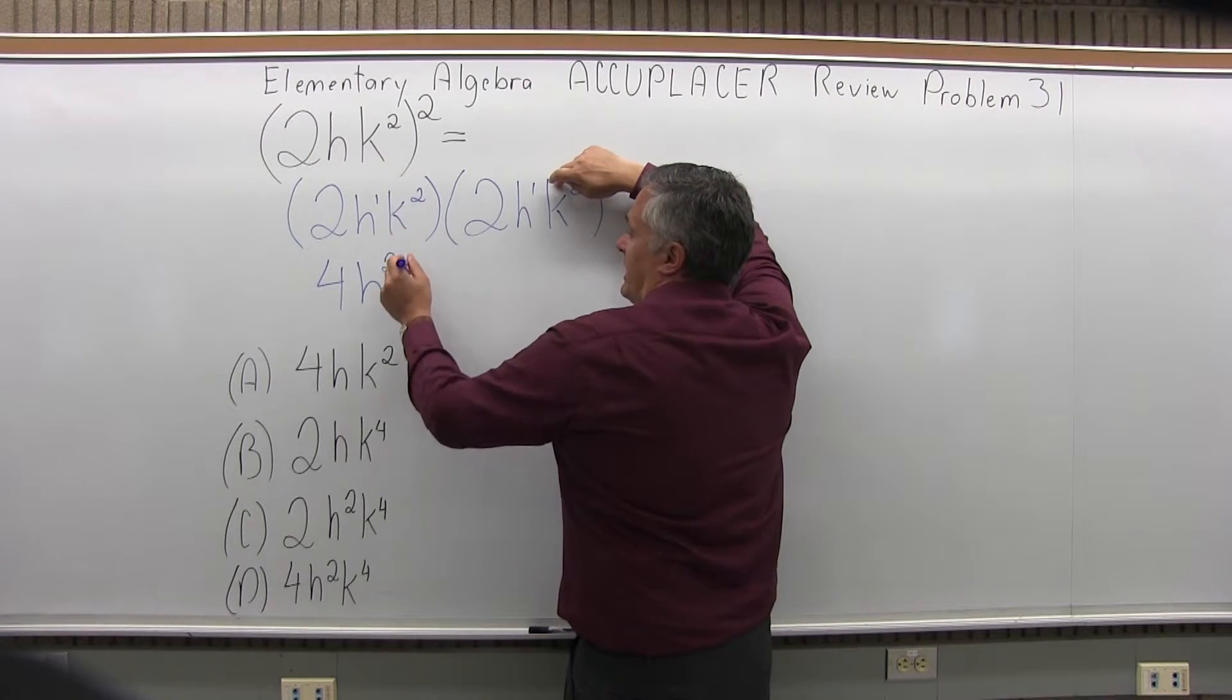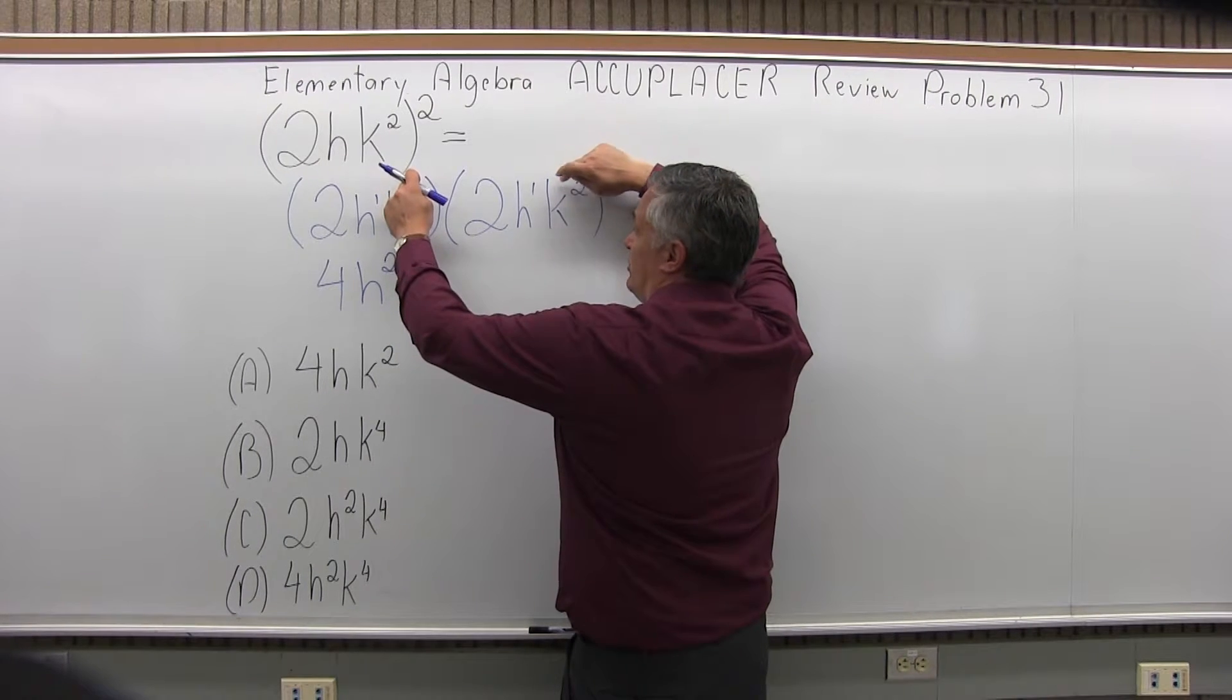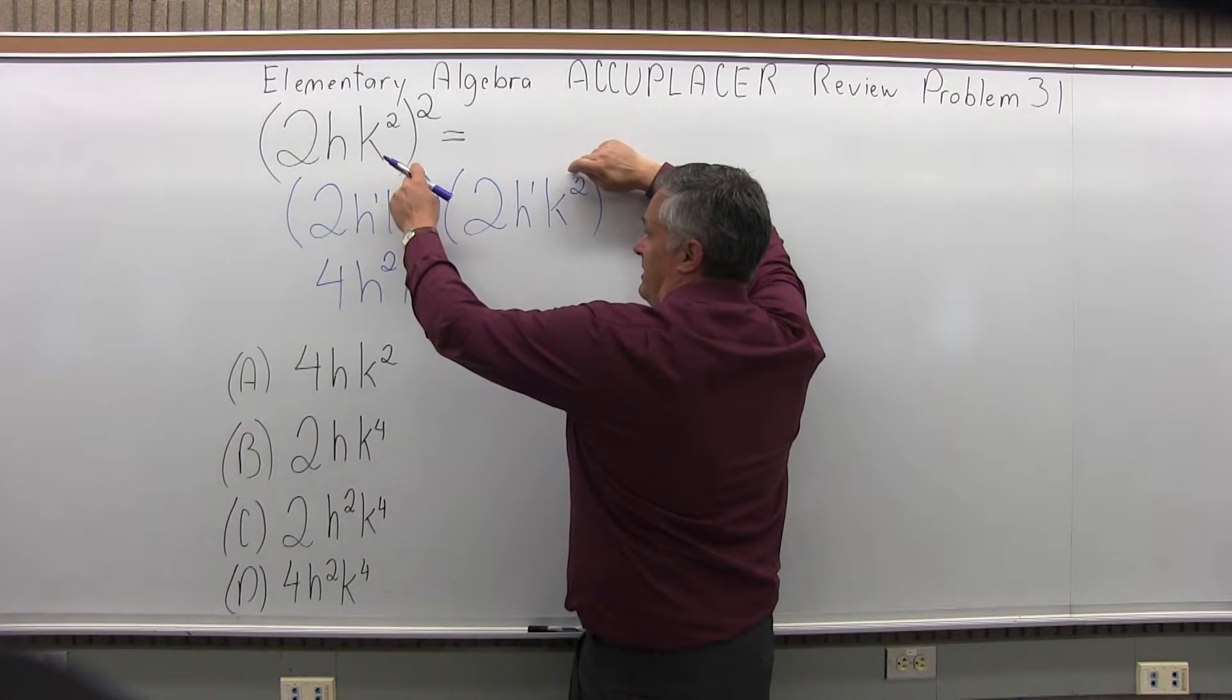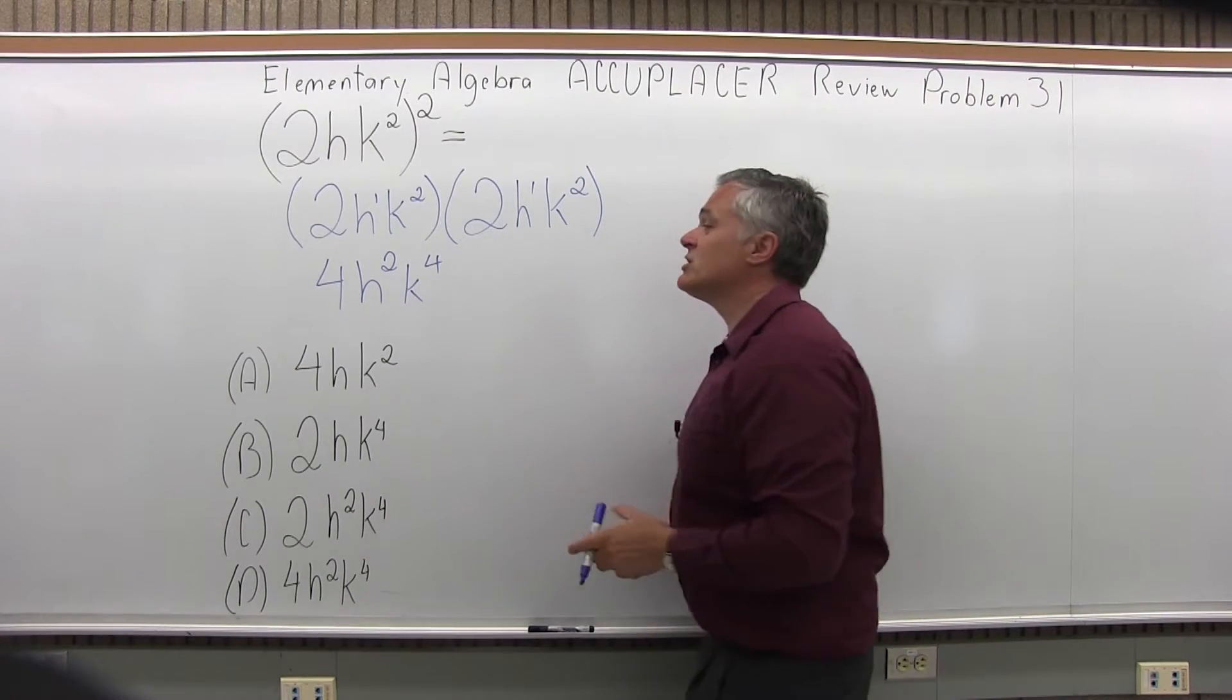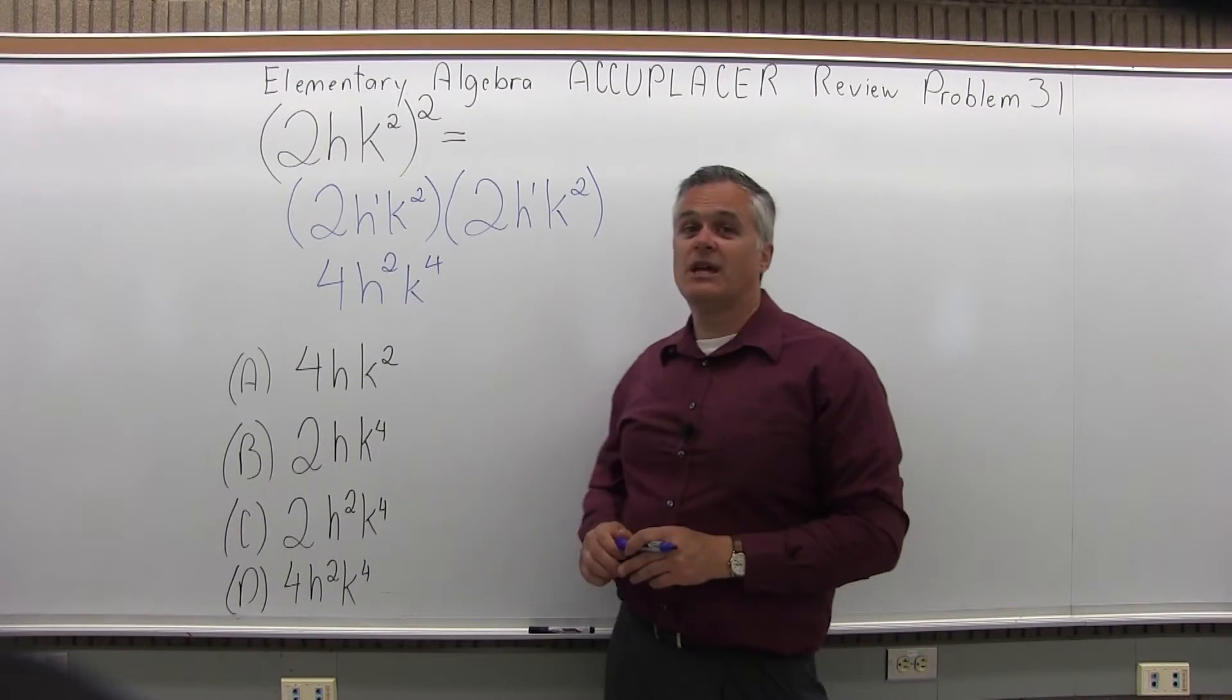And then for the K's, I'm going to have K to the 2 plus 2 for my exponent. I'm going to add those together, 2 plus 2 gives me 4. So my answer is 4H to the second, K to the fourth.